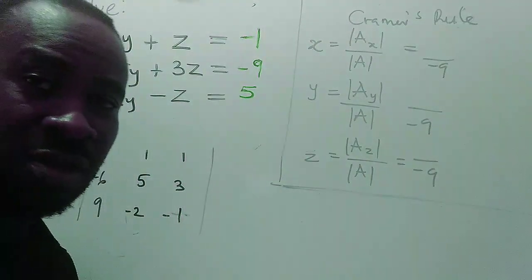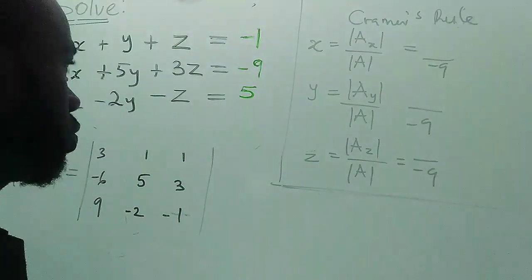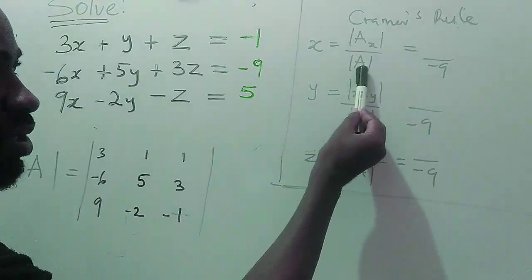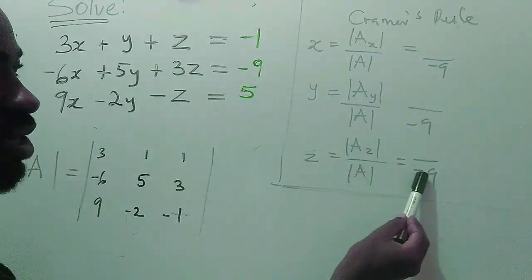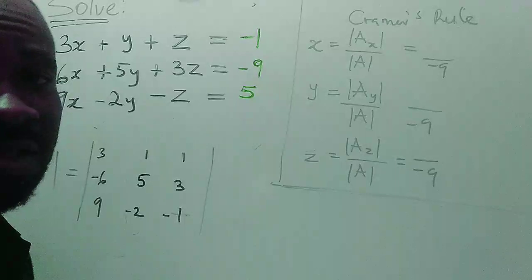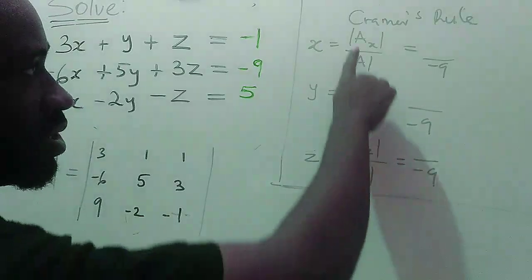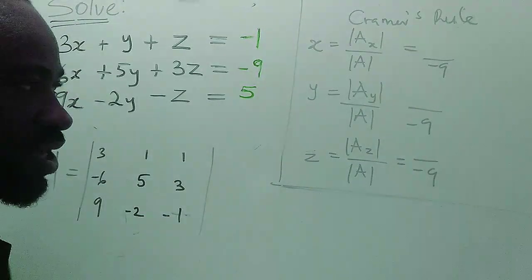So now in my last video, I showed you how we got this determinant of A, this denominator, as minus nine. Now what is there for us to get is determinant from Ax, Ay, and Az.